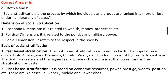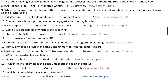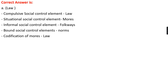Question number sixteen: Which is a compulsive social control element? Option A, law; option B, mores; option C, folkways; option D, norms. The right answer is option A, that is law.